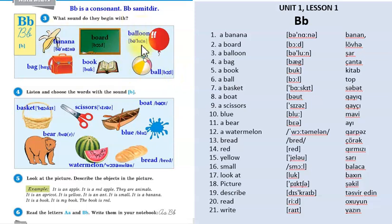All these words begin with the sound b. Bütün bu sözlər b səsiylə başlayır. Four: listen and choose the words with the sound b. Dinləyin və b səsiylə olan sözü seçin. Basket, scissors, boat, bear, water, watermelon, bread, blue. Yəqin ki siz seçdiniz: basket, bear, boat, blue and bread.